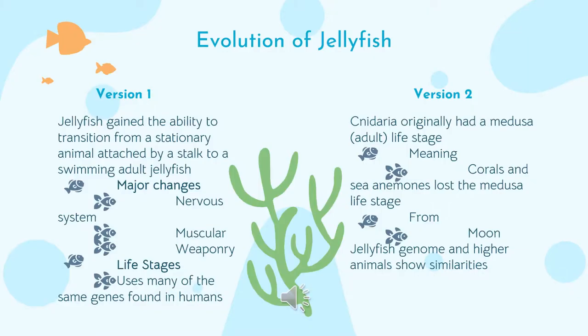Now we're going to be talking about the evolution of jellyfish — how they came to be. There are actually two versions that scientists have come up with. In the first version, jellyfish gained the ability to transition from a stationary animal, called a stationary polyp, which is attached by a stalk to the ground, to a swimming adult jellyfish like the ones we know today. During that transition there are major changes in their nervous system, their muscles, and their weaponry.